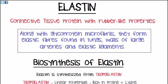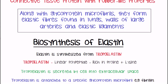So how is elastin made? Elastin is synthesized from something known as tropoelastin. Without going too deeply into how tropoelastin itself is synthesized, what we need to know is that tropoelastin is secreted from the cell. It is a linear polypeptide with a lot of proline and lysine, and it does not have much hydroxyproline or hydroxylysine.